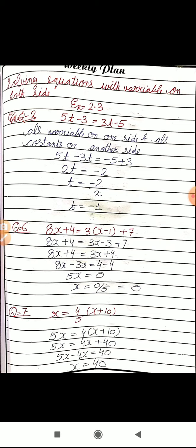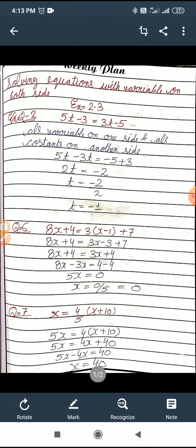Only thing you will have to take care is sign. Thereafter everything will be alright. Let us see question number 6. Rest of the questions are easy that you can do. There is a slight difference in question number 6, that's why I have told you. 8x plus 4 equals 3 bracket x minus 1 close bracket plus 7. So whatsoever is written before the bracket, that will be multiplied inside the bracket with all the terms. So in the second step, 8x plus 4 equals 3x minus 3 plus 7.